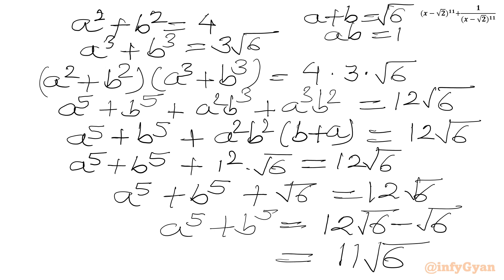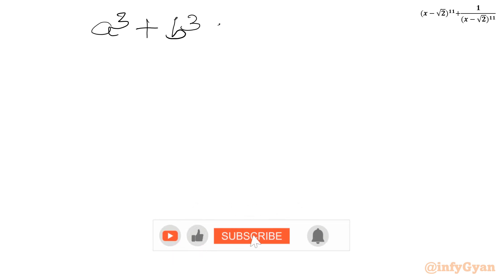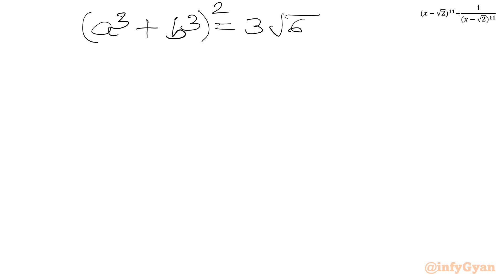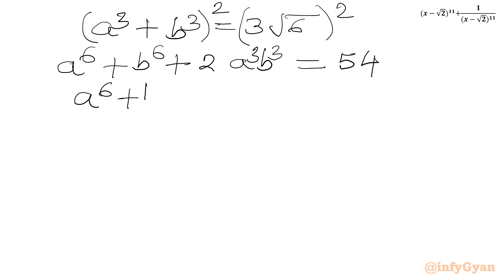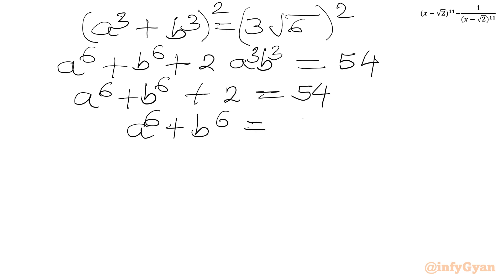Now we need a to the power 6 plus b to the power 6. I will square both sides of a³ + b³ equals 3 root 6. So (a³ + b³)² gives a⁶ + b⁶ plus 2(ab)³ equals (3 root 6)² equals 9 times 6 equals 54. Since (ab)³ equals 1³ equals 1, we get a⁶ + b⁶ plus 2 equals 54. Therefore a to the power 6 plus b to the power 6 equals 52.